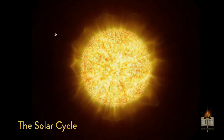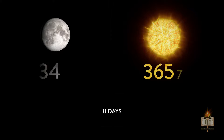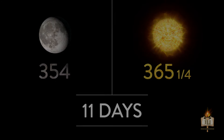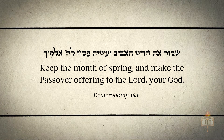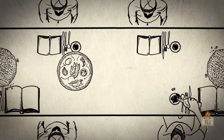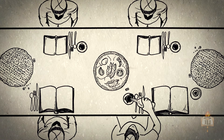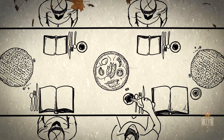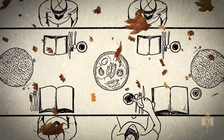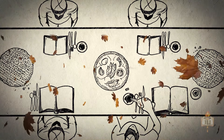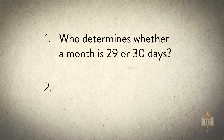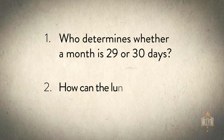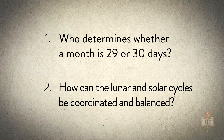The solar orbit consists of 365 and a quarter days. The difference between 12 lunar months and the solar year is almost 11 days. The Torah, however, states that Passover must be in springtime. If no adjustment were made, Passover would occur 11 days earlier each year, eventually drifting into winter, then fall, summer, and spring again. The Jewish calendar thus presents two challenges: who determines whether a month is 29 or 30 days, and how can the lunar and solar cycles be coordinated and balanced?